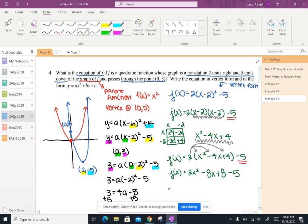From here, we can simplify and we're left with j of x equals two x squared minus eight x plus three. And there's my standard form.